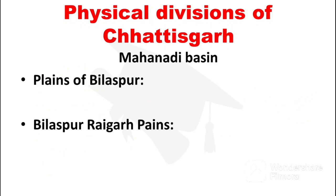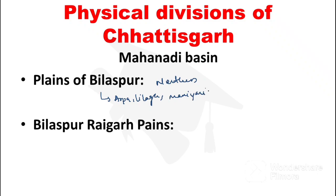Next, Plains of Bilaspur. The Plains of Bilaspur are found in the northern part of Satyazgarh and northern Bilaspur region. These plains are formed by rivers including Arpal, Lilagarh, Maniari, and Agarh. The average height is 200 to 300 meters.